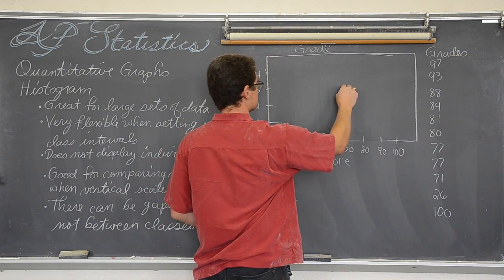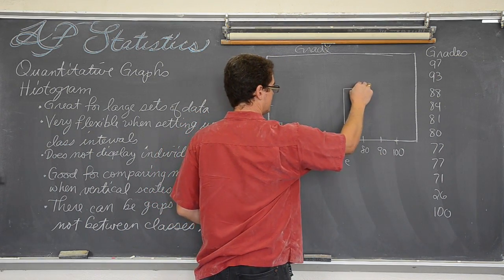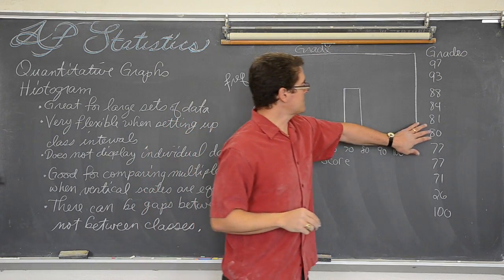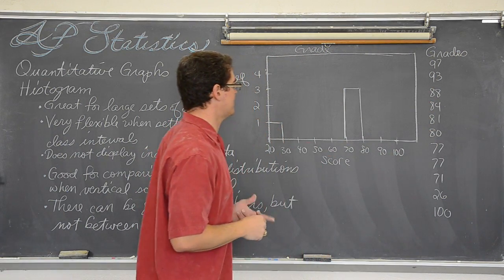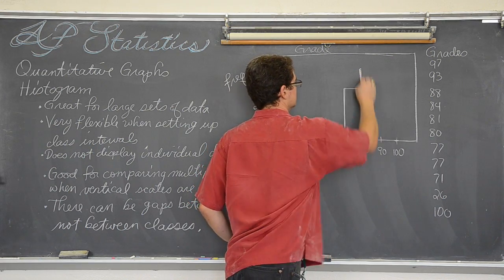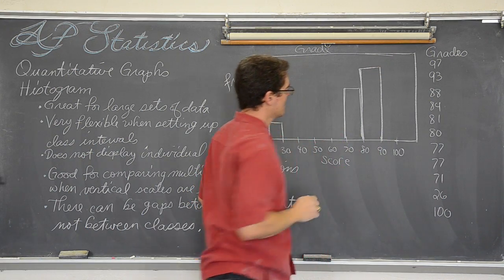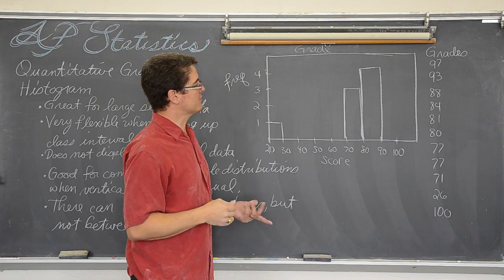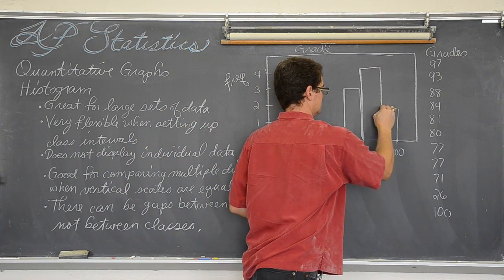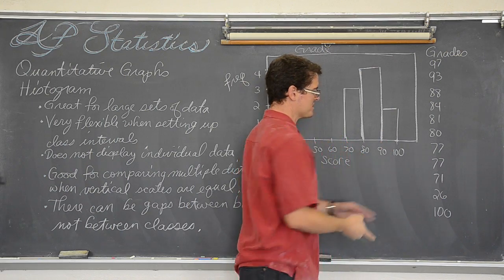We had three people in the seventies. So, boom. We have eighties, eighty to eighty-eight. So we had four people in the eighties. And we had a couple of ninety-three's and ninety-seven.